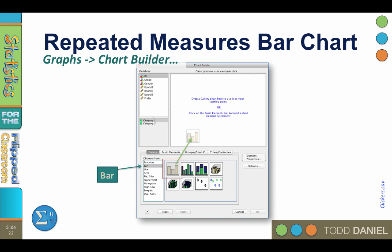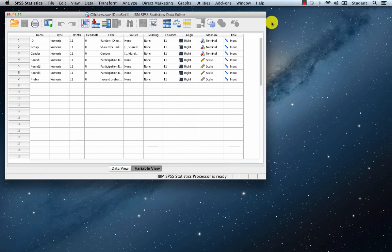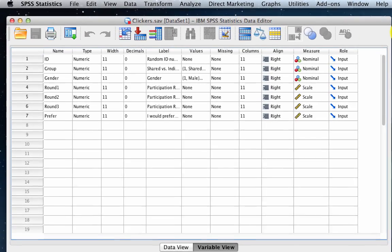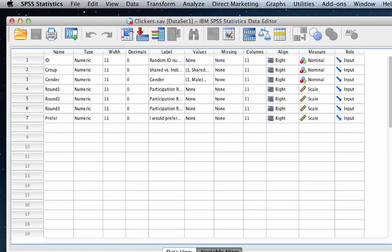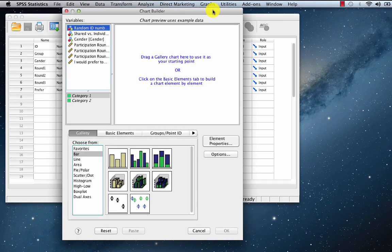To display the bar chart for repeated measures, we will use the clickers.sav dataset and the chart builder in SPSS. Go to graphs, chart builder. If there is a previous analysis in the chart builder, you can click reset to restore the chart builder to its pristine state. Now here in the gallery, choose bar, and then drag simple bar chart up into the canvas.